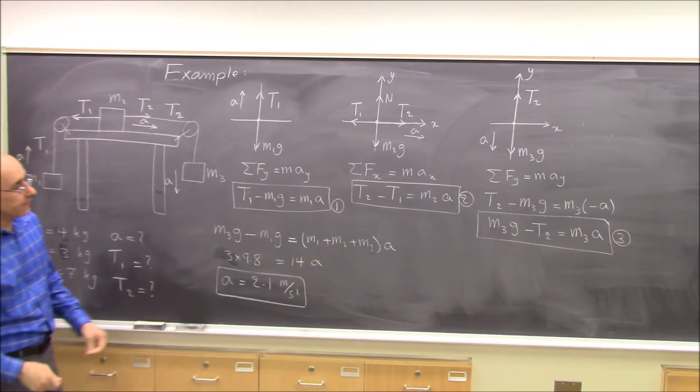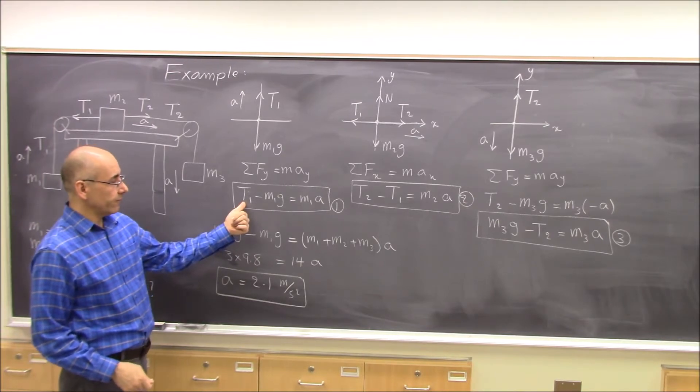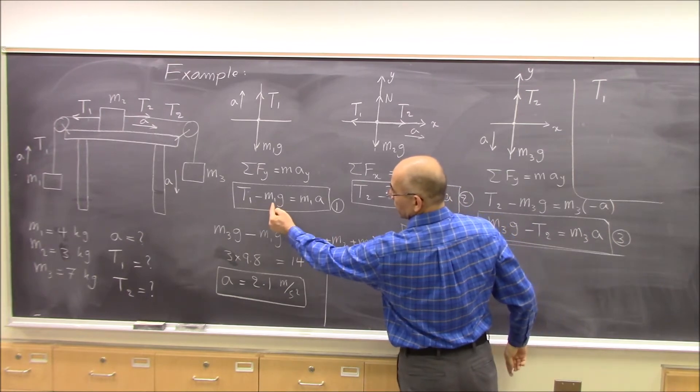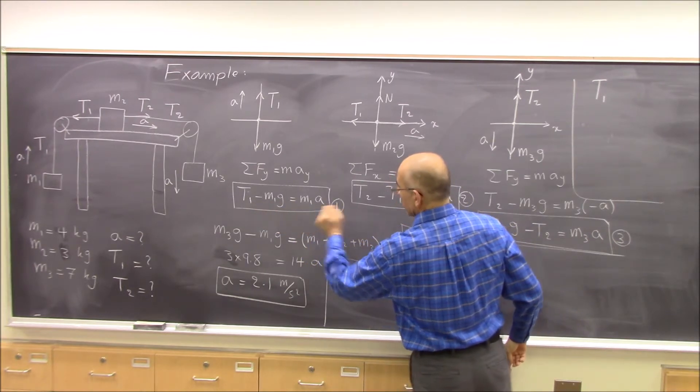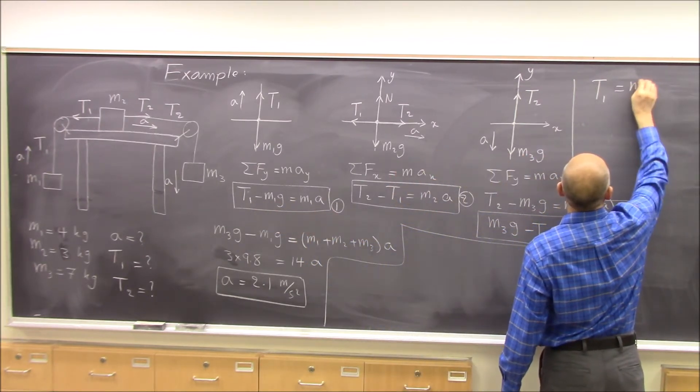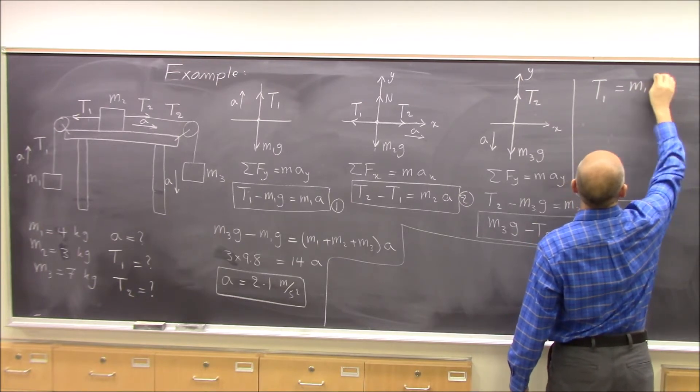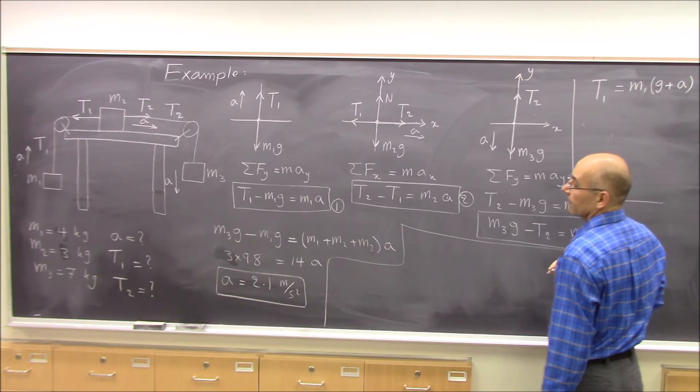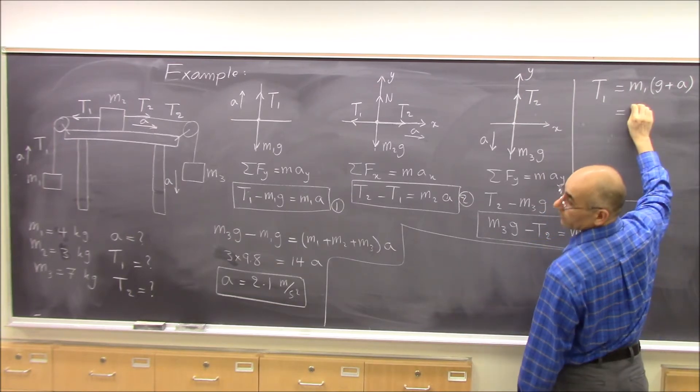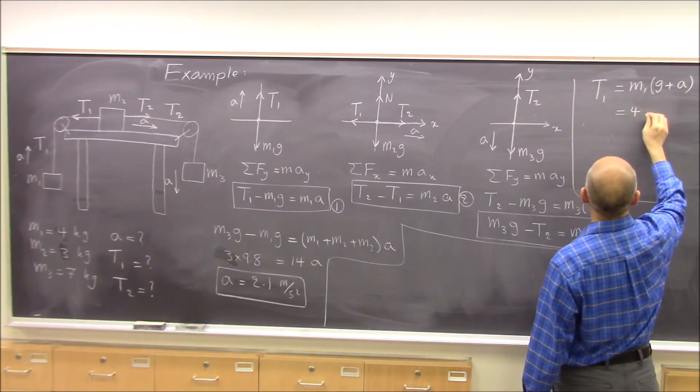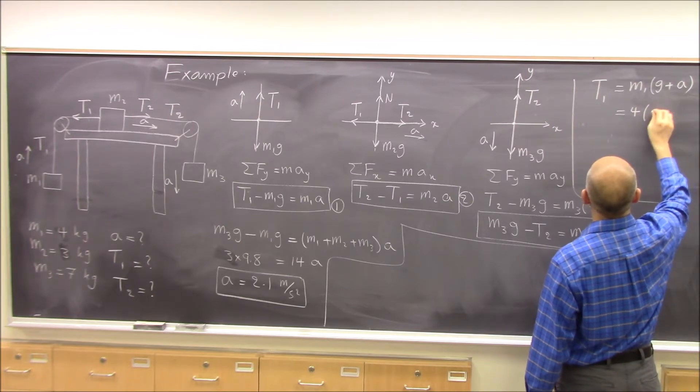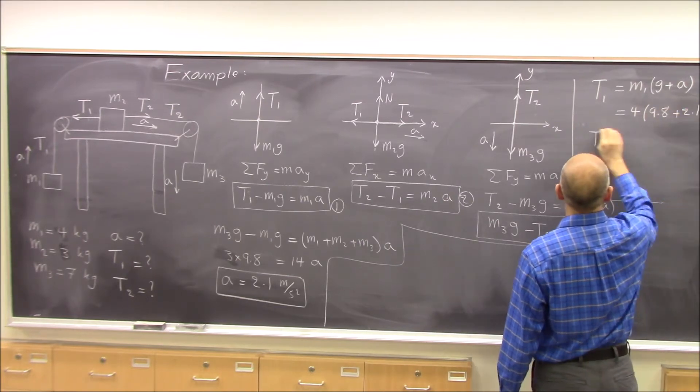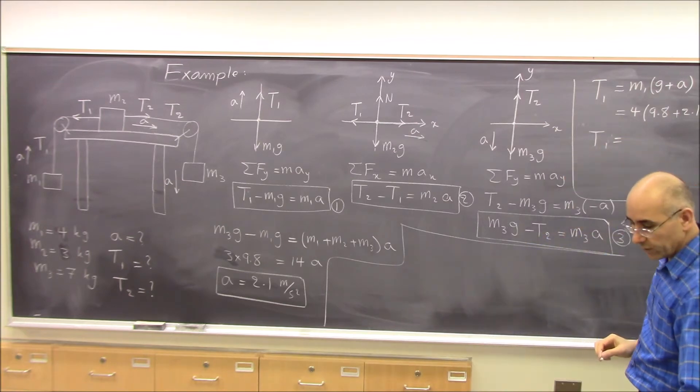And then you can use this equation to find t1. According to this equation, t1 is m1 times g plus a from equation 1. M1 was 4 kg times 9.8 plus 2.1. So t1 will be 47.6.